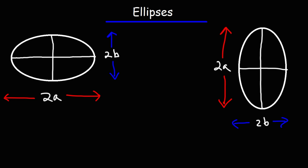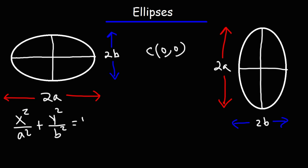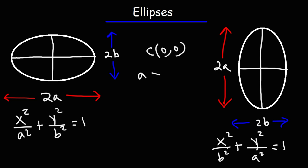Whenever you have an ellipse centered at the origin, here are the equations you'll be dealing with. For a horizontal ellipse it's x squared over a squared plus y squared over b squared equals 1. For the ellipse on the right it's x squared over b squared plus y squared over a squared equals 1. To determine which type you have, look at your a value — a is always bigger than b. If the larger number is under x squared you have a horizontal major axis; if it's under y squared the ellipse is vertical.